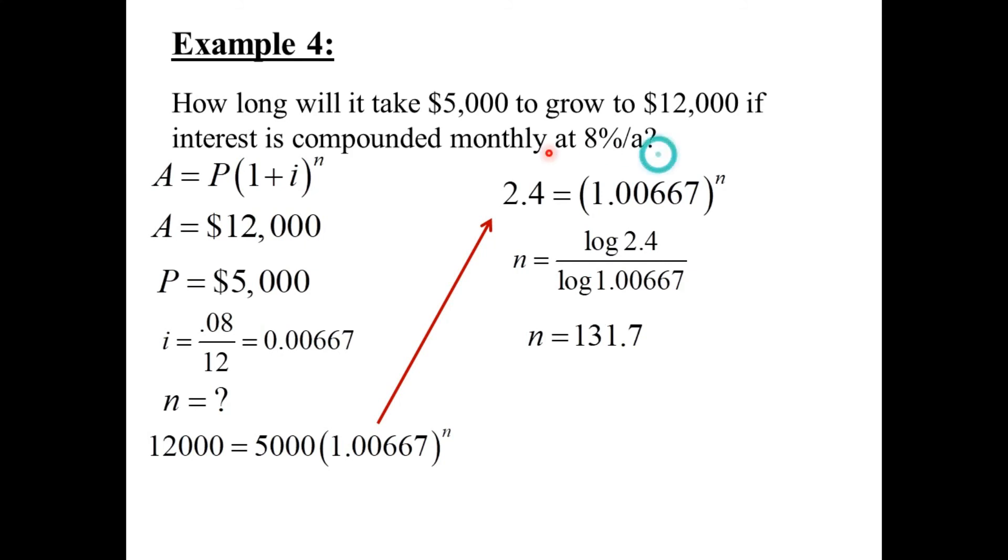But let's recall now, N is the number of periods. And since it's compounded monthly, N is the number of months. So it's 131.7 months, which is about 11 years, when you divide by 12. It will take about 11 years.